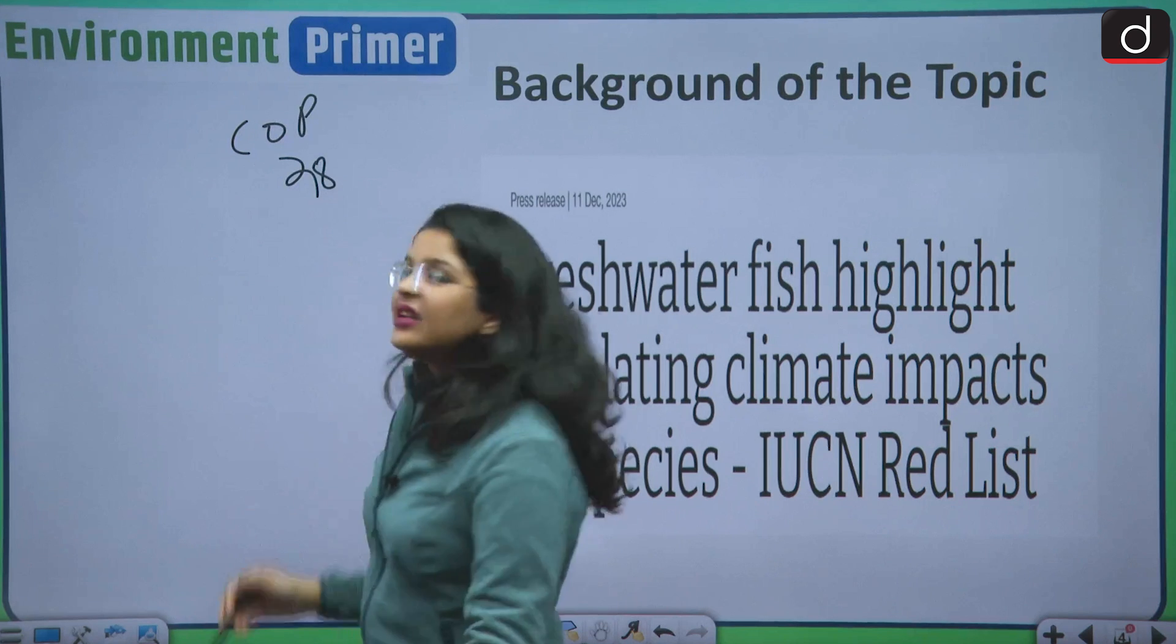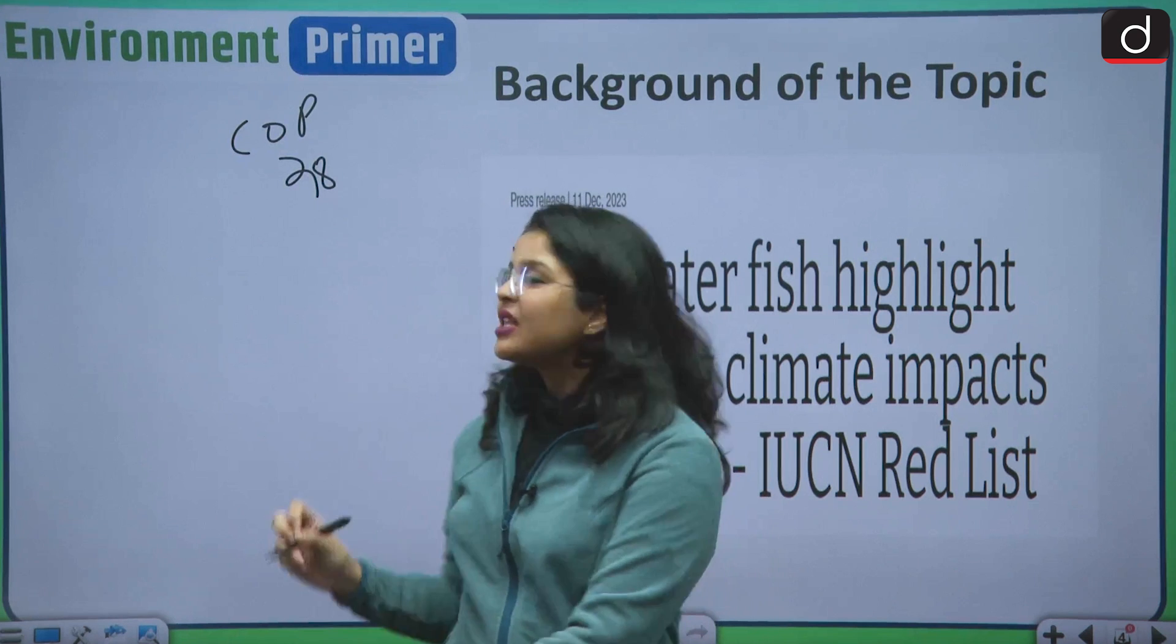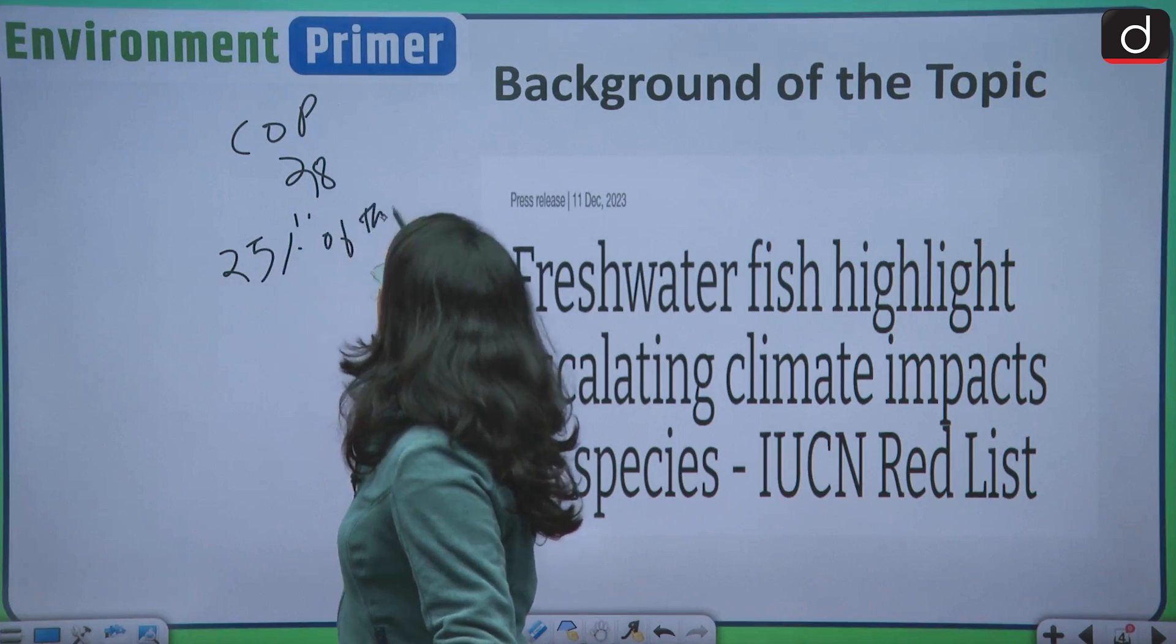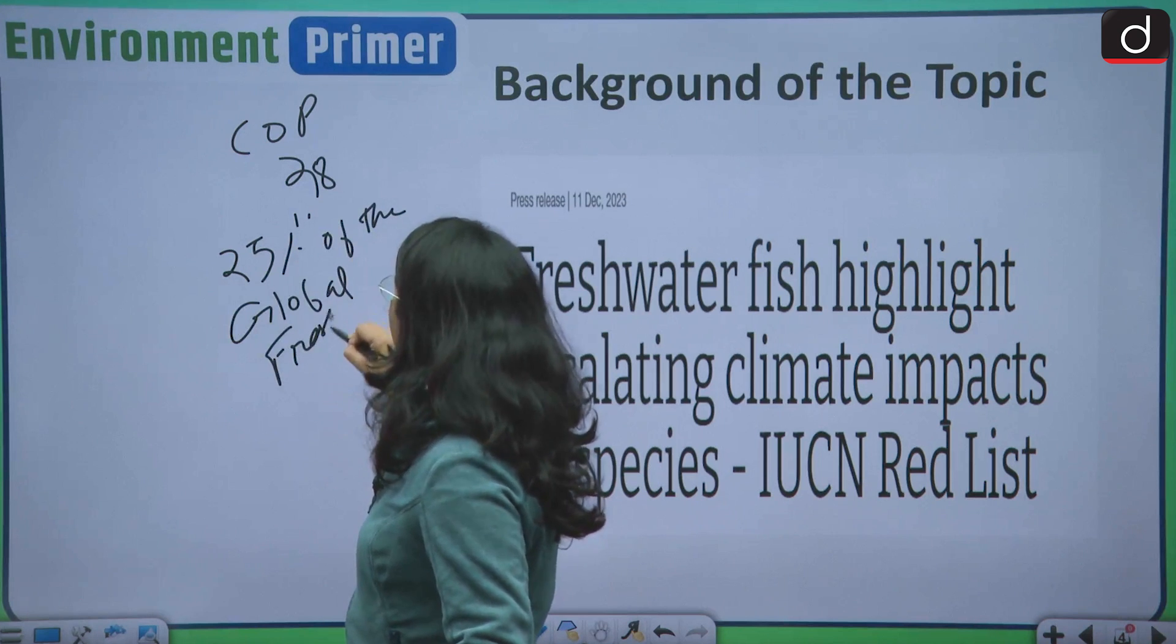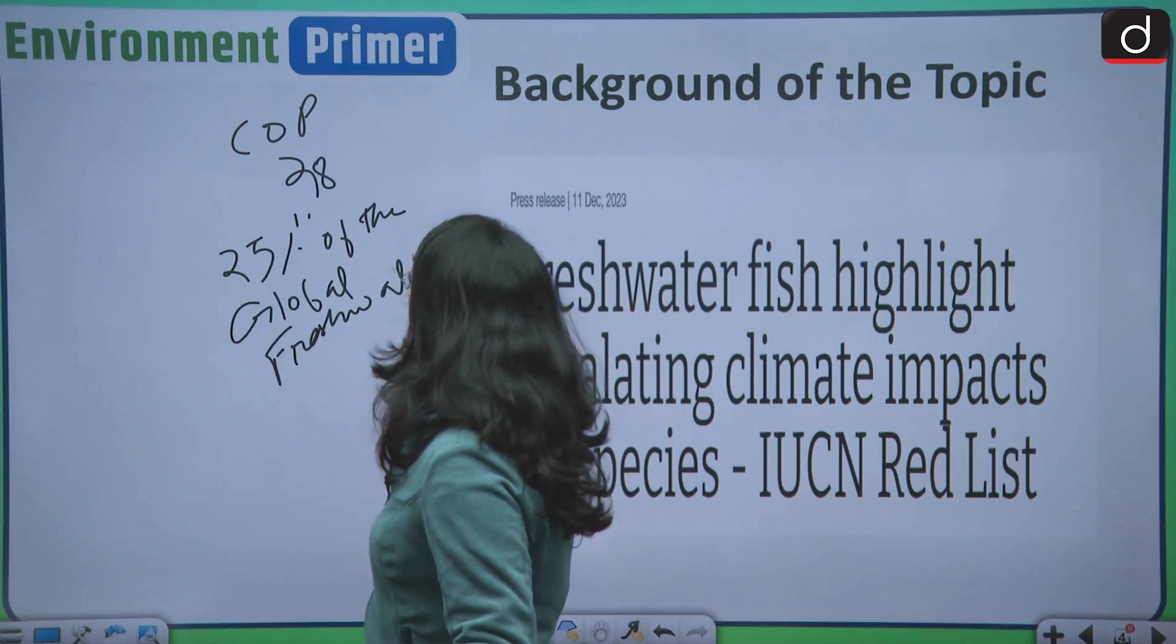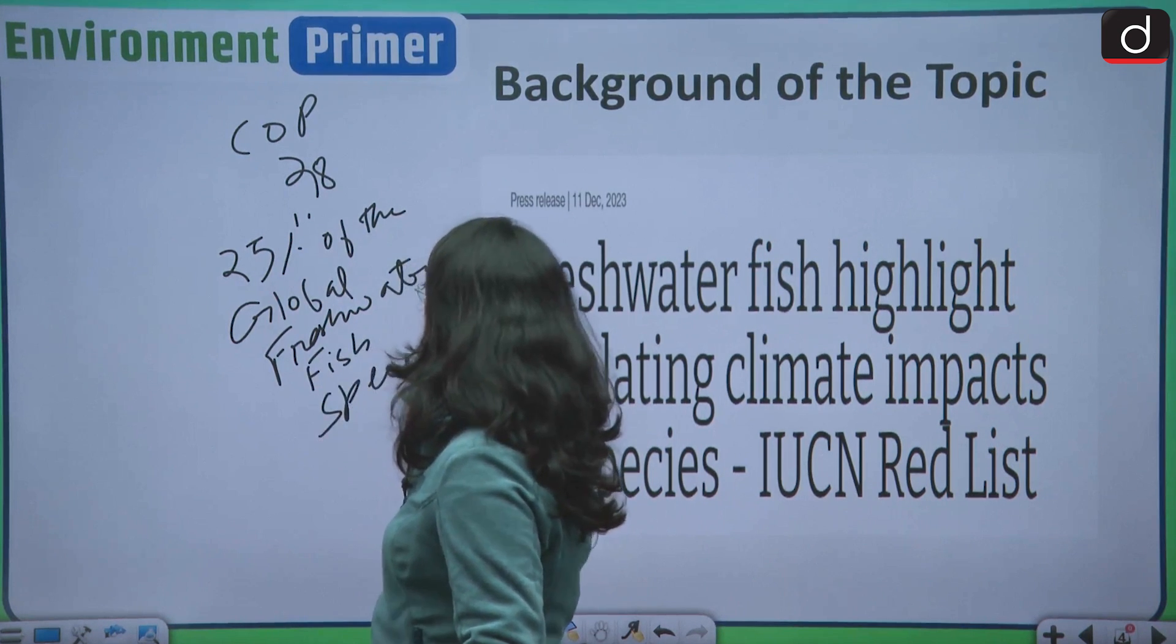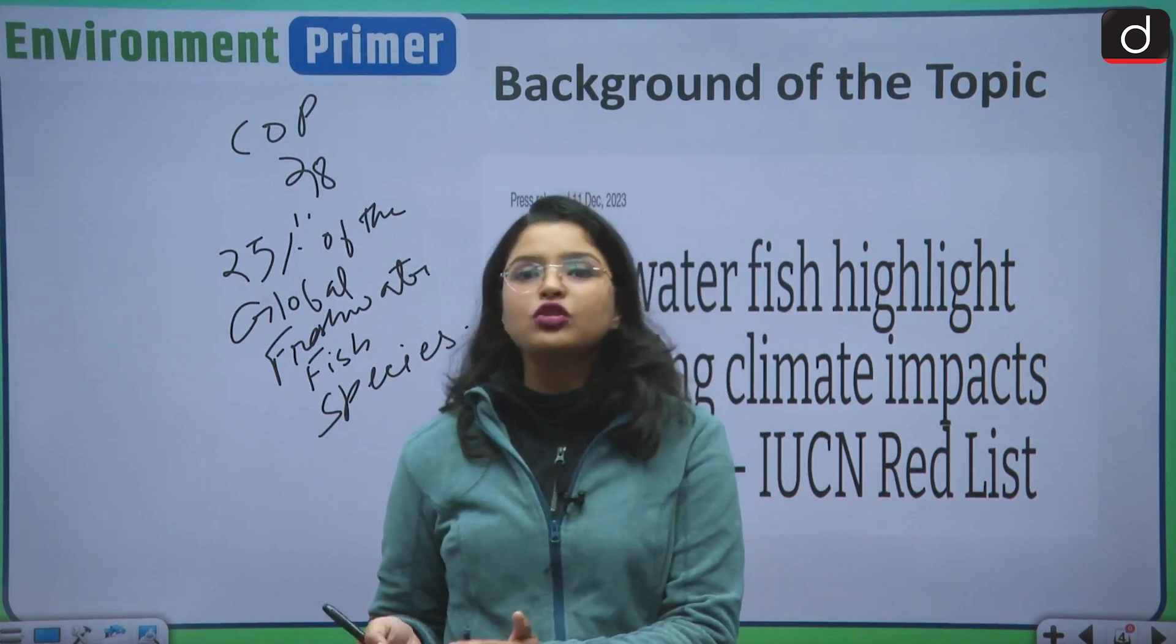Moving forward to the background, a recent updated version of this IUCN Red List has been published after the COP28 and it reveals a shocking figure about the global freshwater fish species. As per this updated list, 25% of the global freshwater fish species are on the verge of extinction.